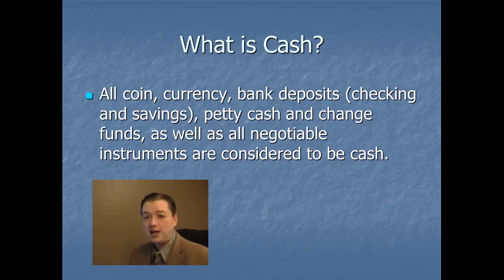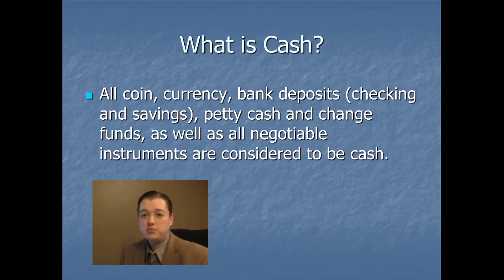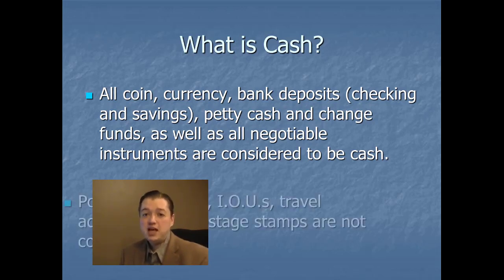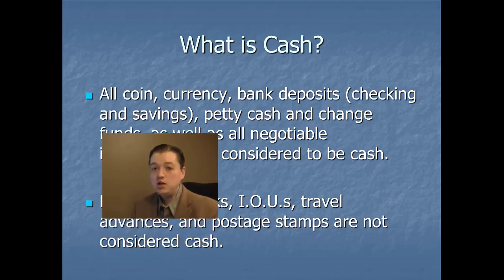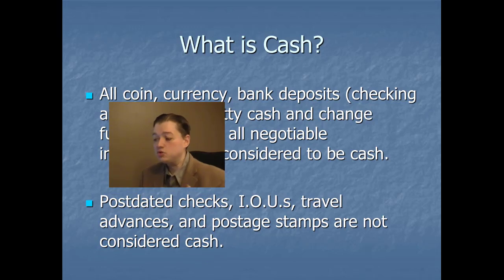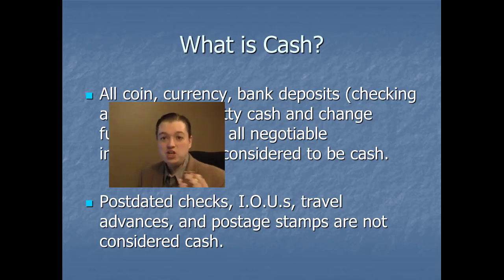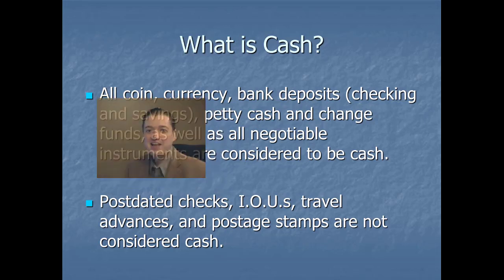What most people don't realize is that FASB had to go in and make a few rules because companies were abusing this privilege. FASB said you can count the standard items, but you can't include post-dated checks, IOUs, travel advances, or postage stamps. Companies really were starting to abuse this general definition of what cash was, so now there are some specific items omitted. Even though these seem to have a short-term value, they are not cash.